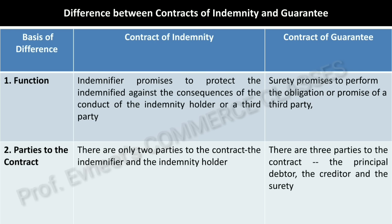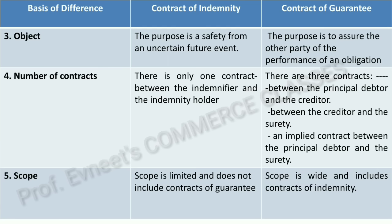Second difference — parties to the contract: a Contract of Indemnity has two parties — indemnifier and indemnity holder. A Contract of Guarantee has three parties — principal debtor, creditor, and surety. If you want to understand Contract of Indemnity in detail, I have made a video on it which you can find via the i-button or description box link. Next difference is object.